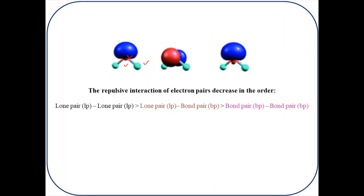These repulsive effects result in deviation from the idealized shapes of the molecules, leading to alterations in bond angles. This explains the various geometries, shapes, and different bond angles observed under different situations. The VSEPR theory can easily and accurately predict the geometry of a large number of molecules, especially the compounds of the p-block elements, which earlier theories could not explain.